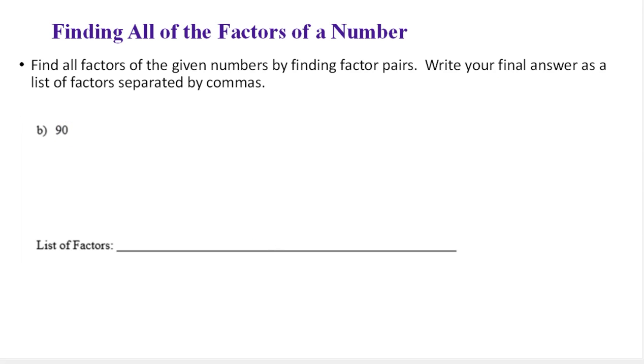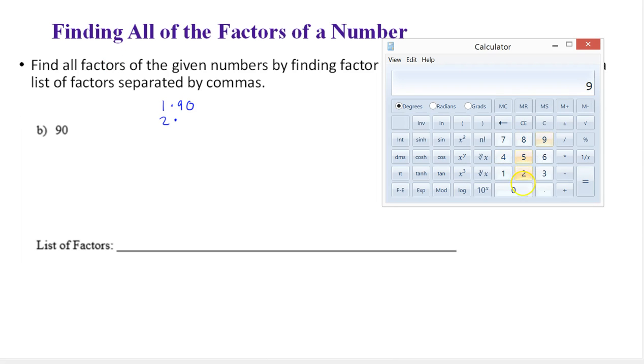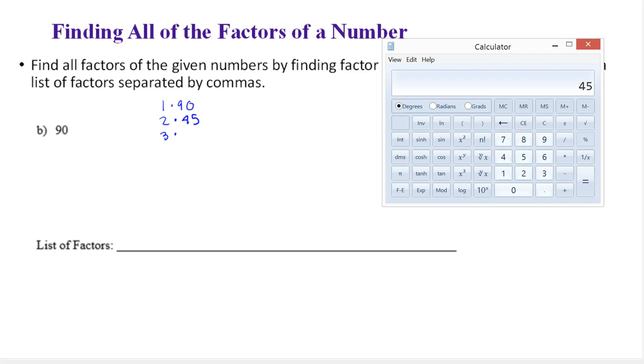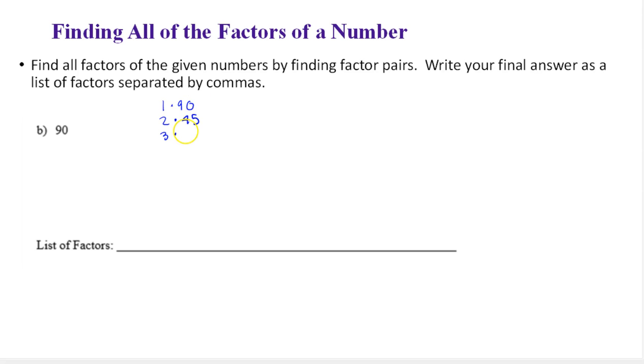Let's look at the next one. Now we have 90. We're going to start with 1 times 90. Now we're going to check 2. Does 2 work? You might be able to do these in your head, but we're just going to use the calculator to verify. 2 times 45. Does 3 work? If I divide 90 by 3, I get 30 exactly. So that's going to work.